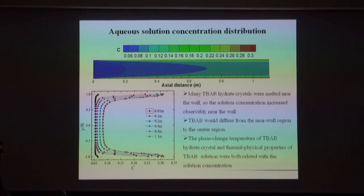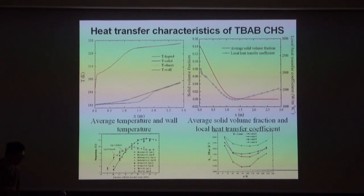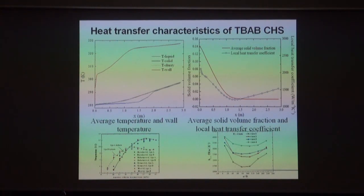For the heat transfer coefficient from inlet to outlet, we also have good agreement with experiment. The solid temperature of TBAB-CHS gradually increases from inlet to outlet—unlike ice slurry—because the phase change temperature increases with increasing aqueous solution concentration. The aqueous solution concentration changes significantly from inlet to outlet: at the inlet it is about 5%, while close to the wall after melting it can reach up to 30%.